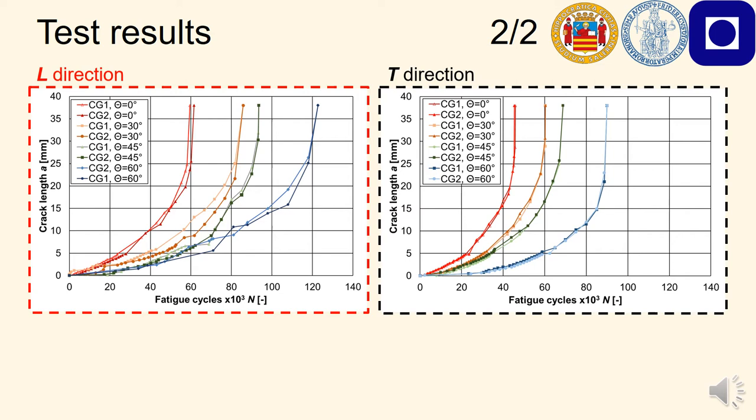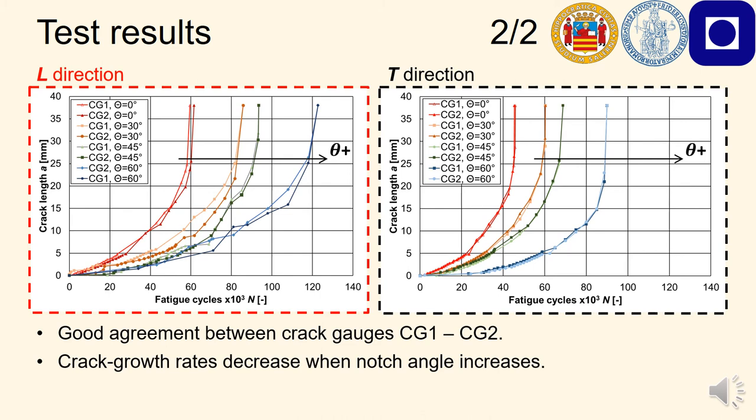We can also see that, as expectable, the higher the notch angle was, the slower the growth rate resulted to be. A high angle of the initial notch returns a low K1 value, especially for the initial part of propagation. In turn, this produces a slower crack propagation rate. Finally, we can also see that all the propagations were faster in the T direction, as if the cracks encountered a reduced material resistance along this direction.